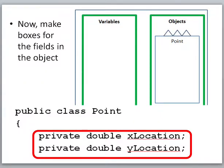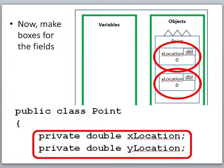The next thing we're going to do is we're going to make boxes inside of this point object that represent the fields in the object. So you can see I made an x location, it's of type double. We set it to the default of 0. Y location of type double, set the location to 0, OK?